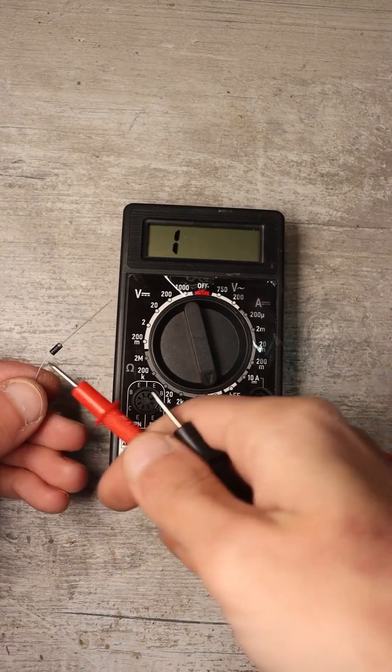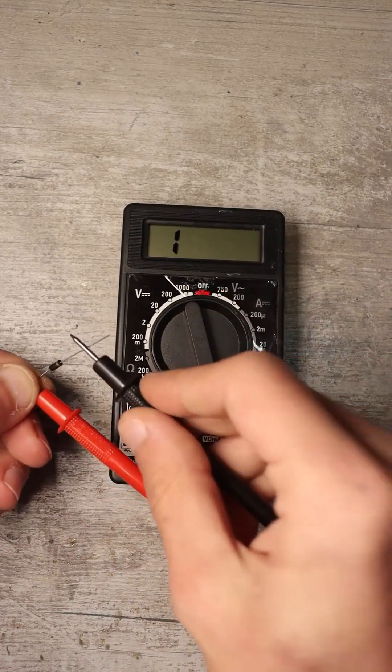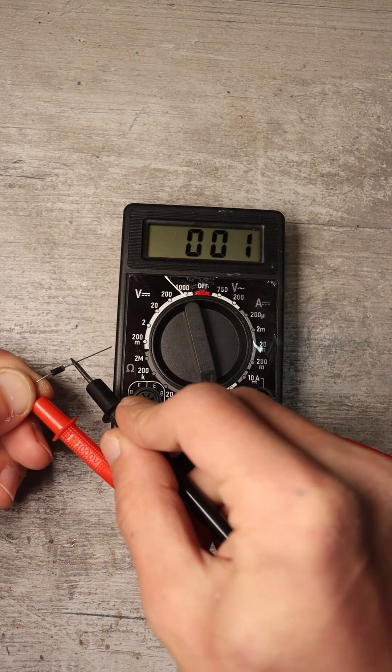If the display shows only 0s or less than 0.2 volts, then the diode is shorted.